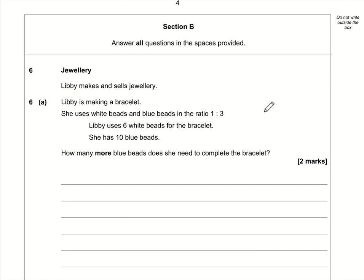Okay, on to Section B. Question number six about jewelry. So we know that the ratio of white beads to blue beads is 1 to 3. Now if Libby is using 6 white beads, we've boosted this ratio by 6. So if we've got 6 times more white, we need 6 times as many blues, so therefore we need 18 blues. So the ratio of 1 to 3 is the same as a ratio of 6 to 18, we've just scaled up the ratio.